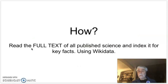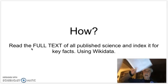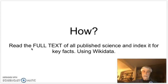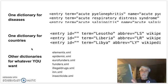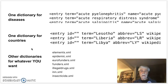How can we solve this? Well, we read the full text of all published science — that's a million articles like this every year — and we index it using Wikidata. We create dictionaries. Here's a typical dictionary, and we have them for diseases, for countries, and anything else that you want.